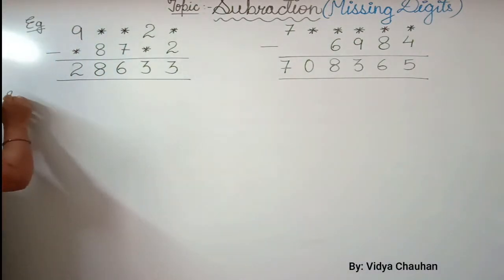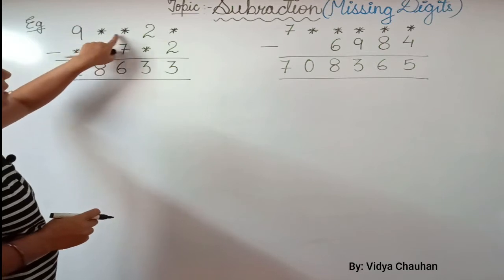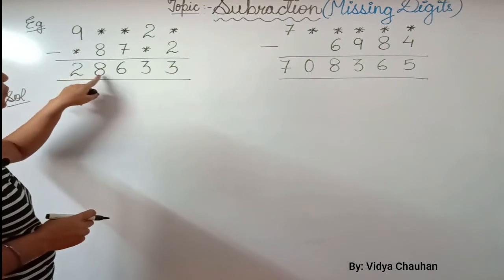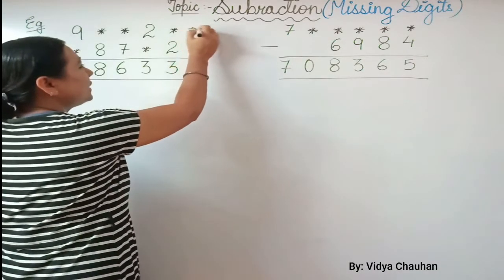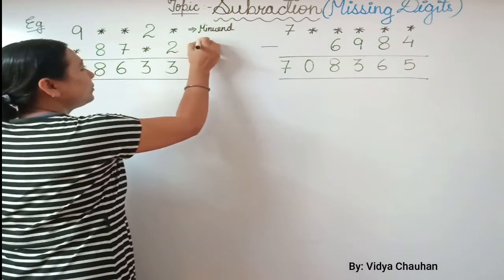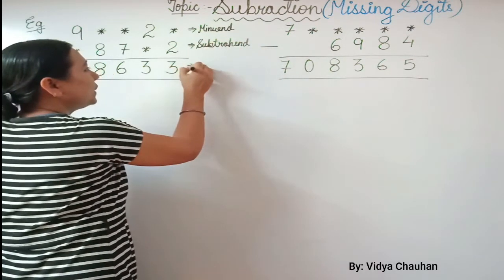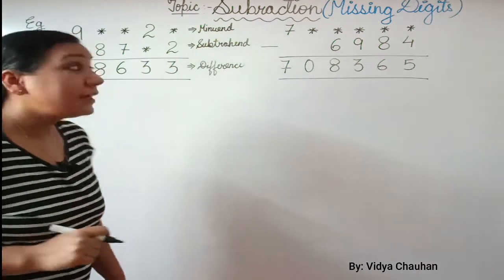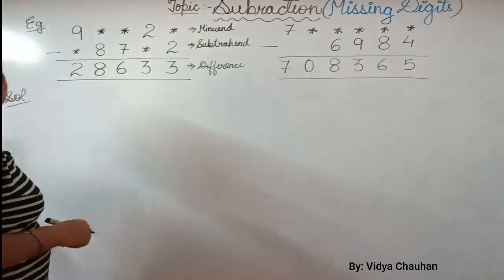In the first example, it is 9, then star, star, 2, star — minus the second value — and the final answer is 28633. The first number at the top is called the minuend, the second number is called the subtrahend, and the third value is called the difference. We have already discussed this.